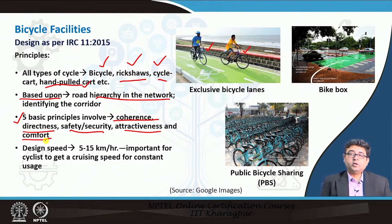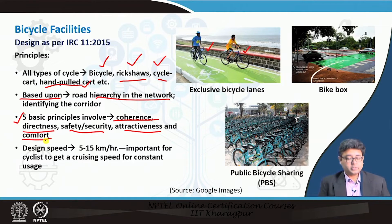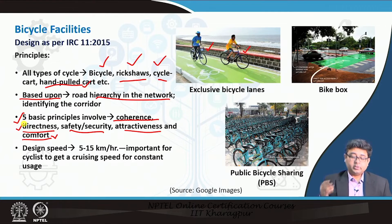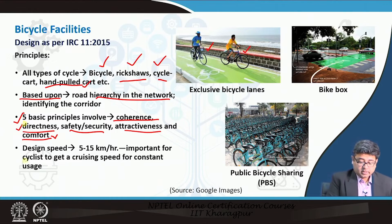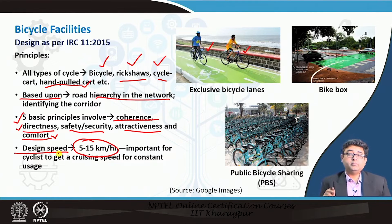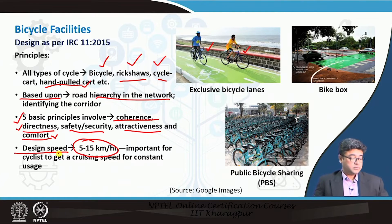The five basic principles to keep in mind while designing for cycle infrastructure are: coherence, directness, safety and security, attractiveness, and comfort. Many of these are very similar to what we looked at when designing pedestrian infrastructure — safe, secure, attractive to choice users, comfortable, direct, and avoiding detours. IRC also recommends designing facilities so that a speed of at least 5 to 15 kilometers per hour can be maintained. If it is too low, cyclists will be discouraged; if too high, there may be safety repercussions.